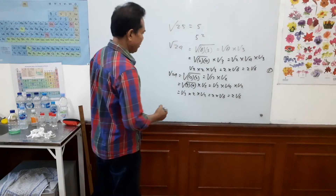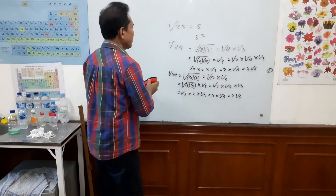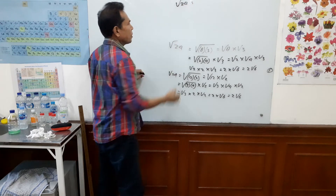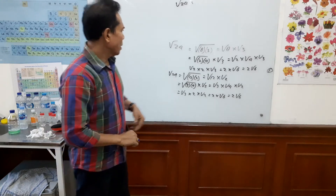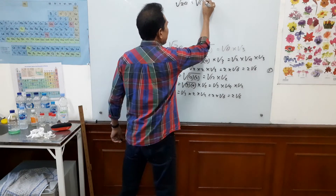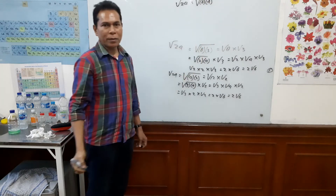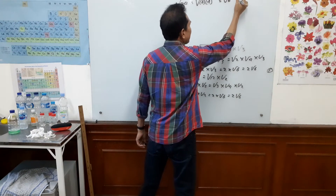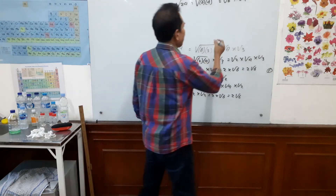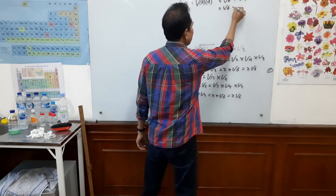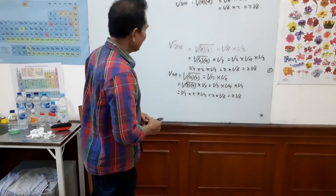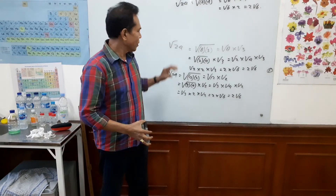We still have another way to solve this problem. We have used 8 and 3, and 12 and 2. Now we take 6 and 4. So we break square root 24 into square root 6 times square root 4. Square root 4 we can easily solve — it becomes square root 6 times 2, which equals 2 square root 6. Finish! So this is the simplest way to solve this kind of square root.